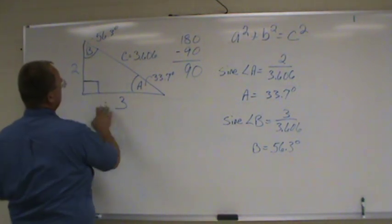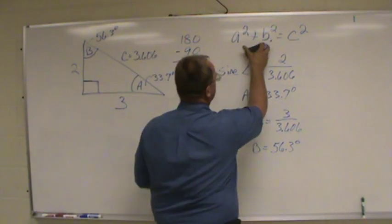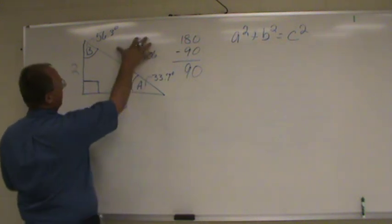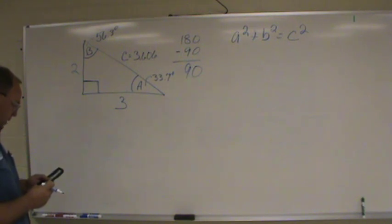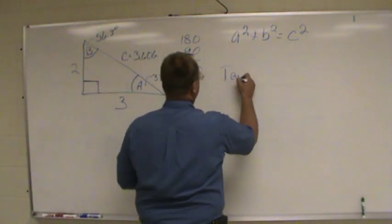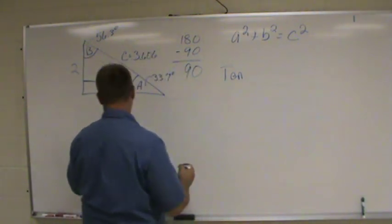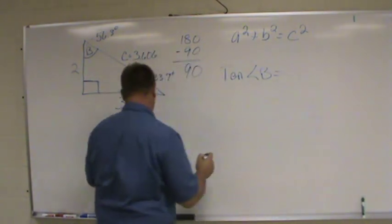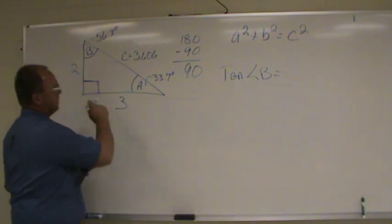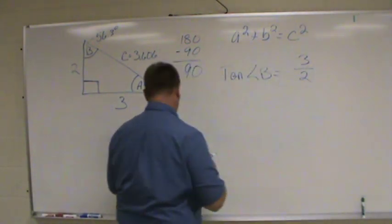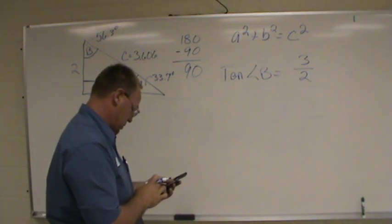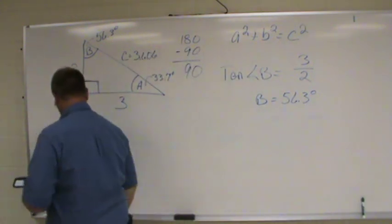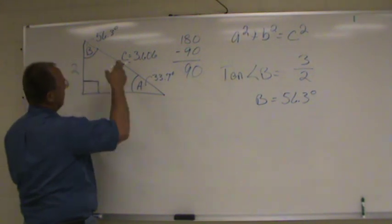Let's say we know the side adjacent and side opposite but don't know the hypotenuse and don't want to use the Pythagorean theorem. We use tangent: tangent equals side opposite over side adjacent. So tangent of angle B equals side opposite divided by side adjacent, which is 3 divided by 2. That comes out to B equal to 56.3 degrees. There are always different formulas you can plug in depending on what information you have.